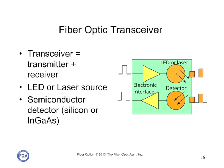Inside the transceiver, we have a transmitter that has an electronic interface that accepts an incoming electrical signal, converts it to an optical signal using a light emitting diode or a laser, and couples it into an optical fiber. On the receiver side, we have a detector — a semiconductor device — that takes an incoming optical signal, converts it to an electrical signal, and then an electronic signal interface conditions the outgoing signal for the electronic circuits that the transceiver is connected to.